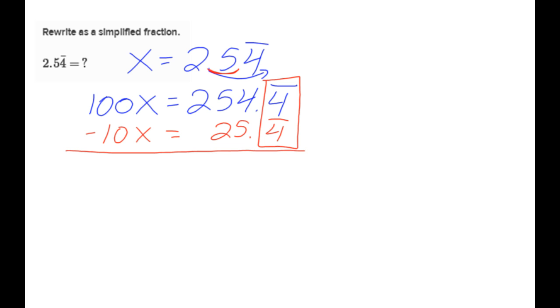When I subtract, I'm going to get 90x equals 229. Then, I divide both sides by 90. And 229 over 90 is in simplest form, so that is your answer. And again, this problem was just like the previous set of problems that we did with repeating decimals. So, a little review.